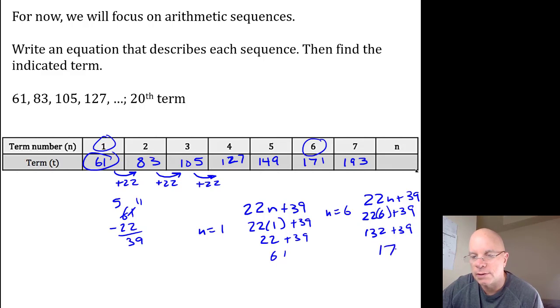So that checks out. The equation would be t equals 22n plus 39.